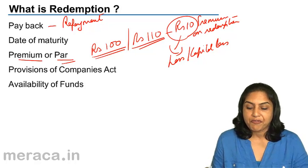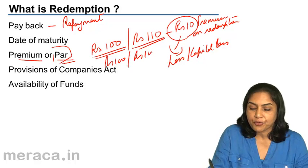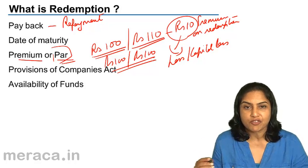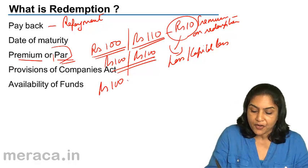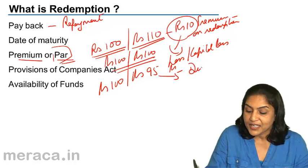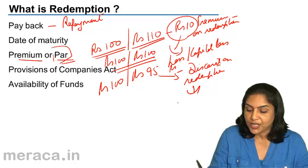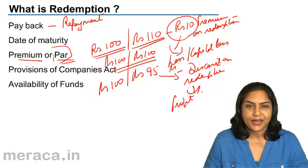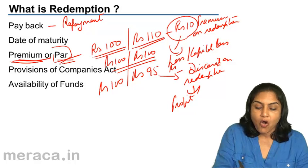Of course, preference shareholders may be repaid at par, where a rupees 100 share is repaid at rupees 100. If preference shares were redeemed at a discount, it would mean that for a rupees 100 share we would return maybe only rupees 95, where rupees 5 could be the discount on redemption. Discount on redemption would actually be a profit for the company. However, this does not happen in practice; preference shares are normally redeemed either at a premium or at par.